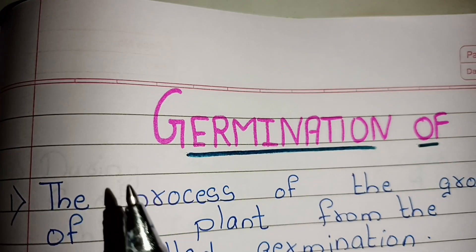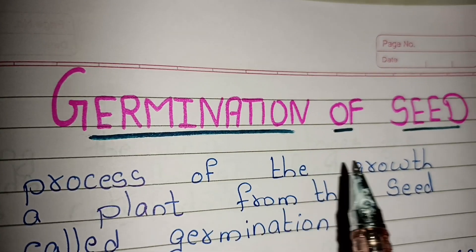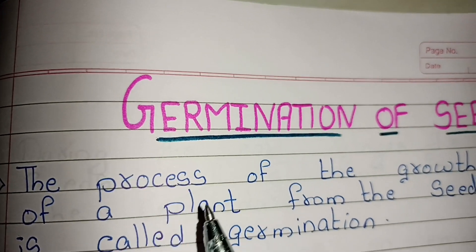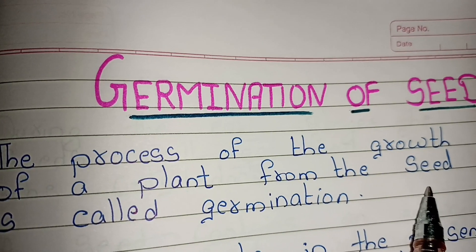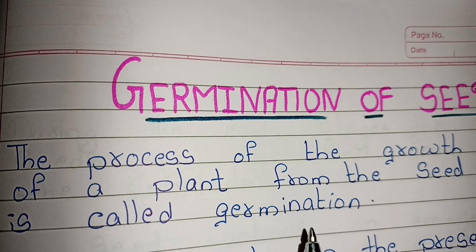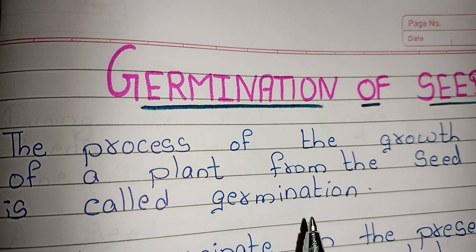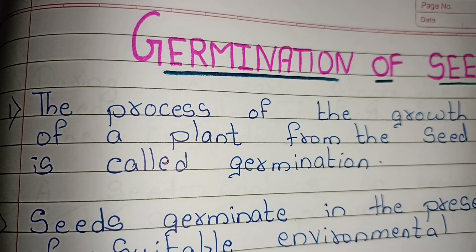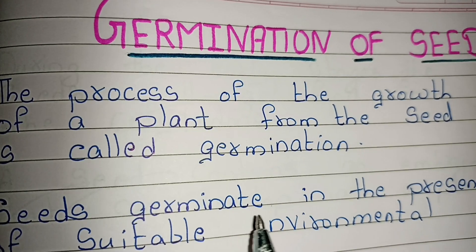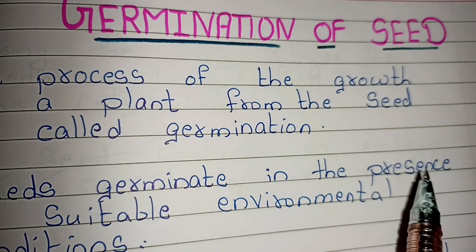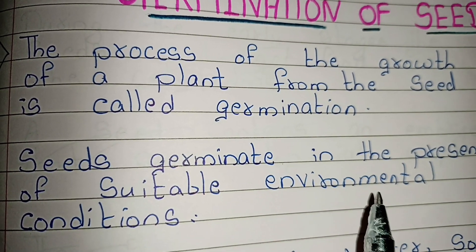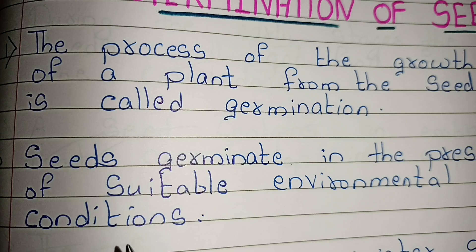The process of the growth of a plant from the seed is called germination. Seeds germinate in the presence of suitable environmental conditions.